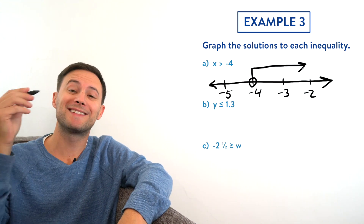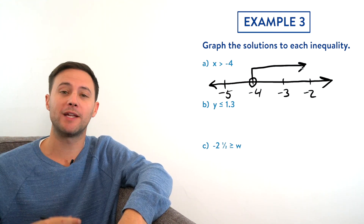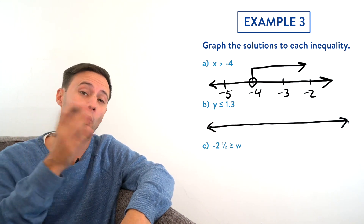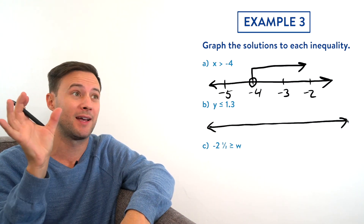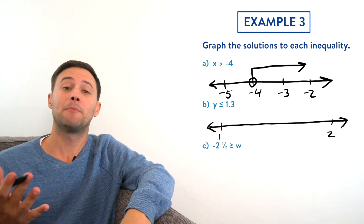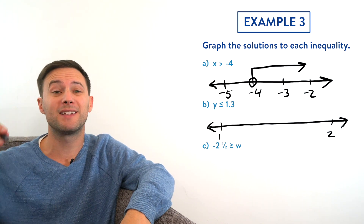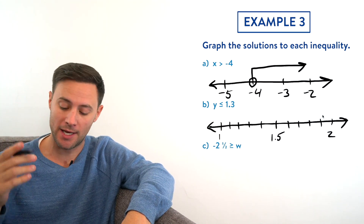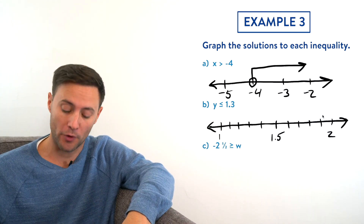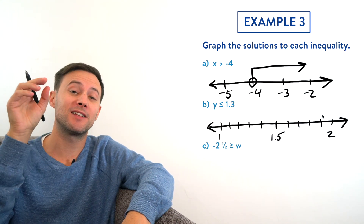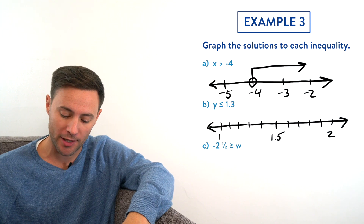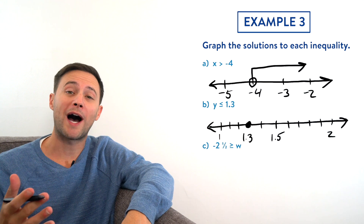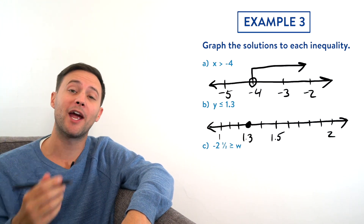Part b: y ≤ 1.3. We draw a number line with 1 and 2 as outer boundaries and break it into tenths to locate 1.3. Because it's less than or equal to, we place a closed circle at 1.3, then draw the arrow to the left to show all values less than or equal to 1.3.